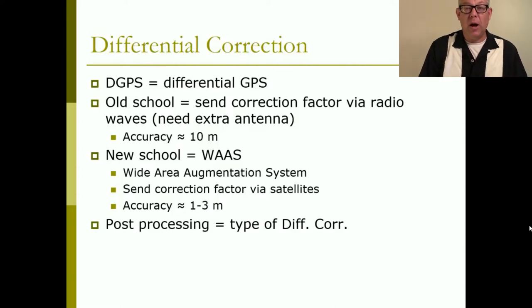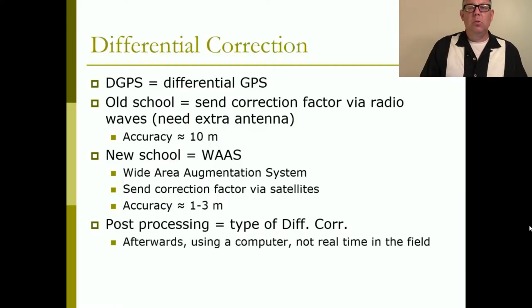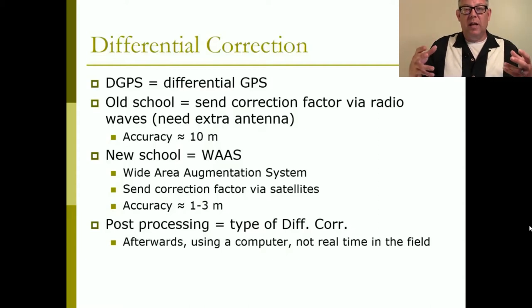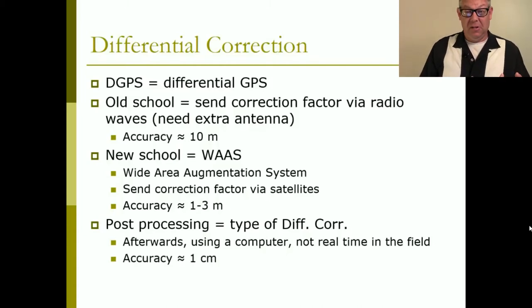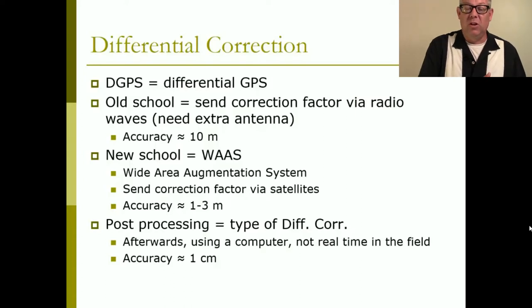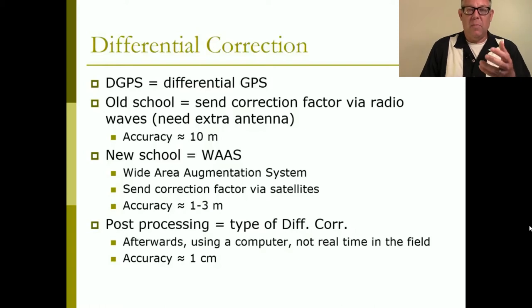You can get even more accurate coordinates through post-processing. Post-processing is when you record the signal in the field, then run that data through a computer program that applies algorithms providing even more correction than the GPS is capable of in the field. This gets you down to sub-centimeter accuracy — meaning you could drop a dime in a field, mark it with your GPS, come back a year later, and find that dime. Of course, human factors matter too — if I've had coffee, my hand shakes more than a centimeter.